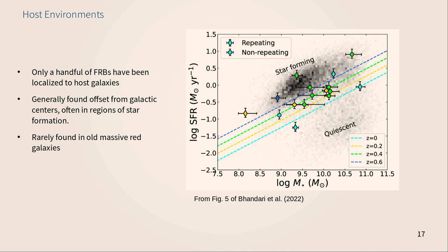So far only so many FRBs have been localized to host galaxies, but there's been a lot of work examining the properties of those hosts. When they're really close we can see where within the galaxy they fall. Comparing host galaxies of several localized events against stellar mass and star formation rate, you have star-forming galaxies and quiescent galaxies. Most observed events fall just below the main sequence of star-forming galaxies. When observed within galaxies they tend to be found in regions of star formation — in the galactic disc, in areas with H-alpha emission. They're also often found offset from the centers of galaxies, which implies it's probably not an active galactic nucleus or supermassive black hole progenitor model.